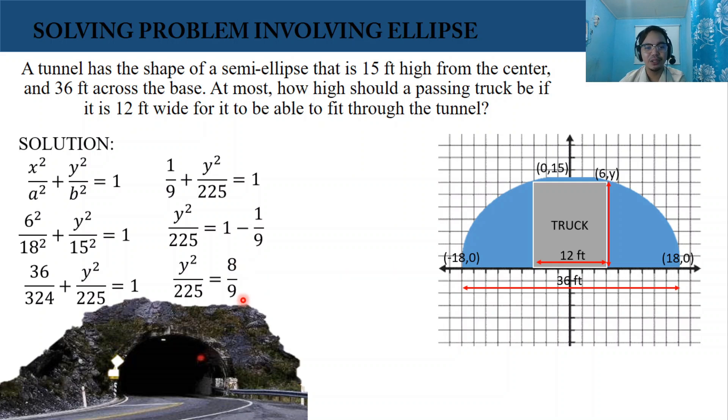Then isolate y squared. So we're going to multiply both sides by 225. So we're going to cancel 225 on our left side.